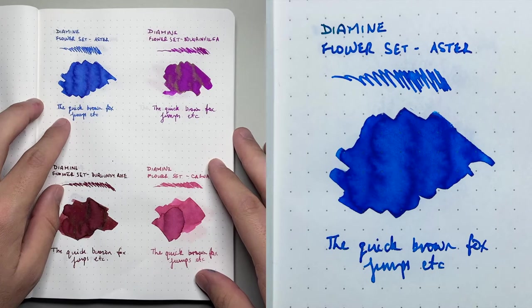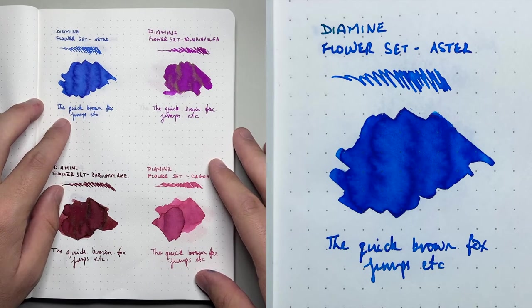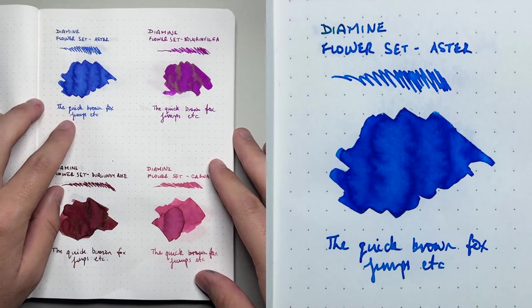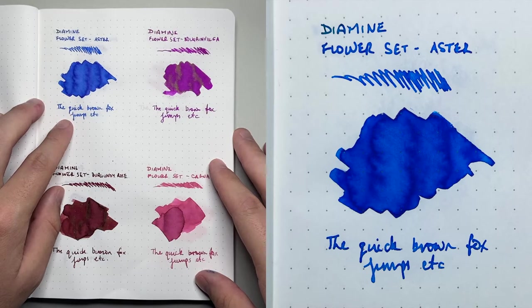So let's start. First we have Aster. Aster is a nice sort of royal blue color. It's got some nice shading and it does have a little bit of sheen occasionally depending on the paper it's on.